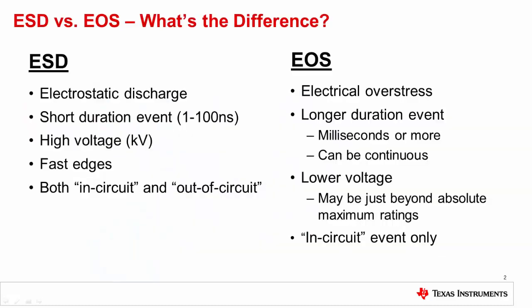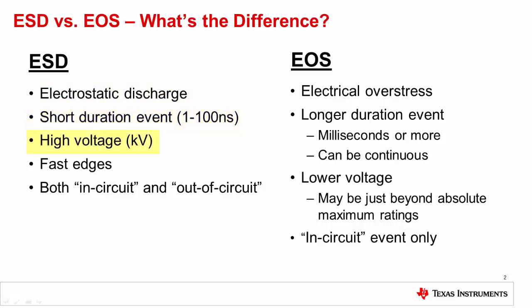First, let's compare ESD and EOS. ESD, or electrostatic discharge, is the sudden flow or discharge of static charge between two oppositely charged objects. ESD is a very short event, typically in the range of nanoseconds. The voltage magnitude of an ESD event can be quite high, in the range of kilovolts, and the pulses can have very fast edges.